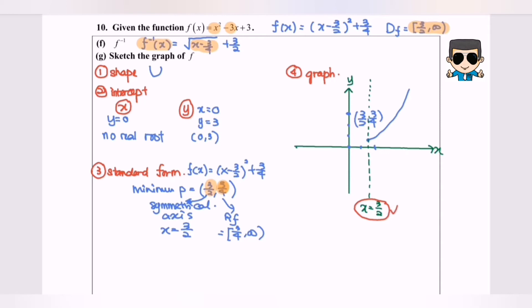So it becomes y equals 3 over 2. Where is the location of 3 over 2? Around here. The symmetric axis will be around here.